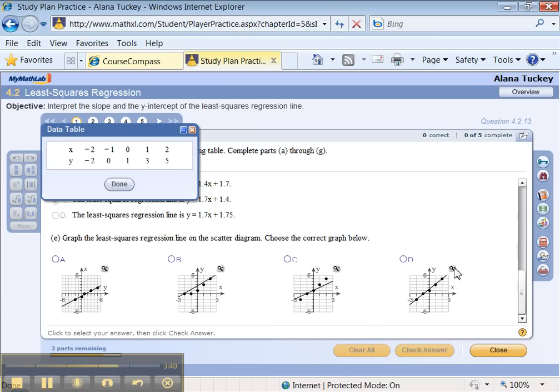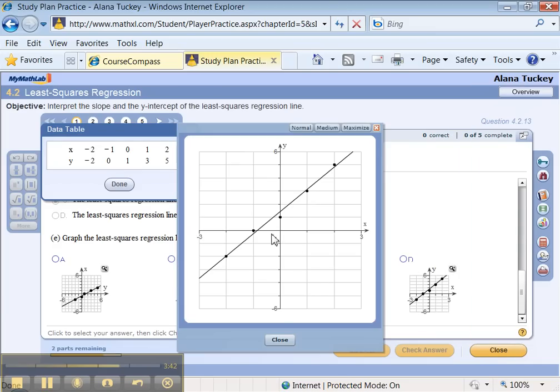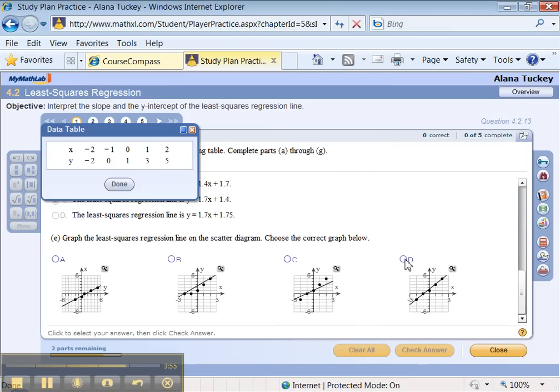What about this one? There we go. Over negative 1 up 0, over 0 up 1. And you can see it's kind of coming close to all the points, kind of averaging them out, if you will. That's what the least squares regression line does. So let me click on this one. Yay! Good.